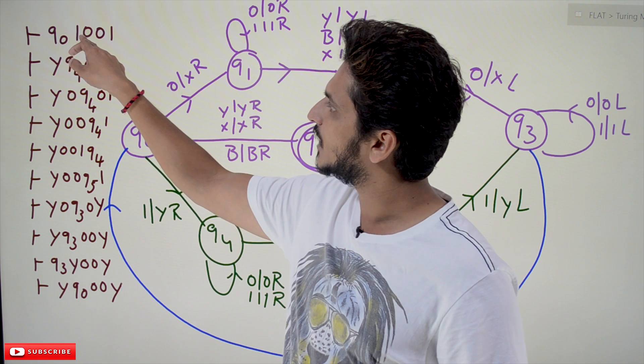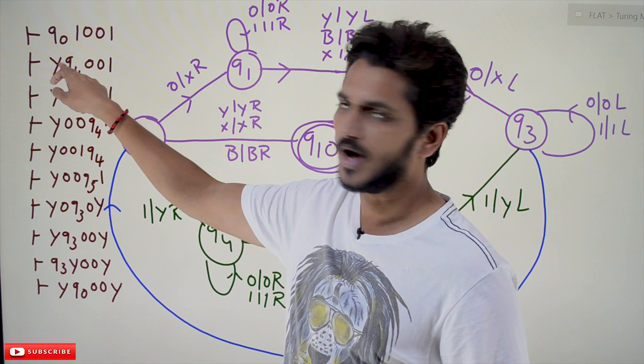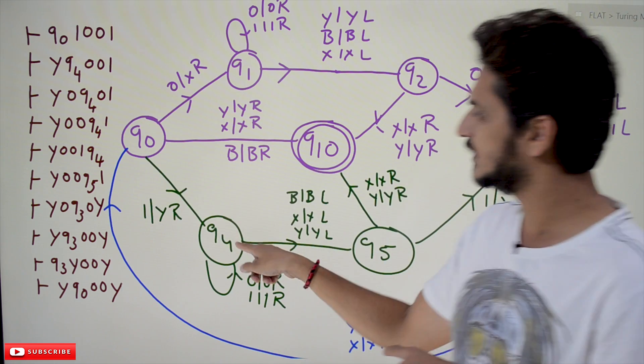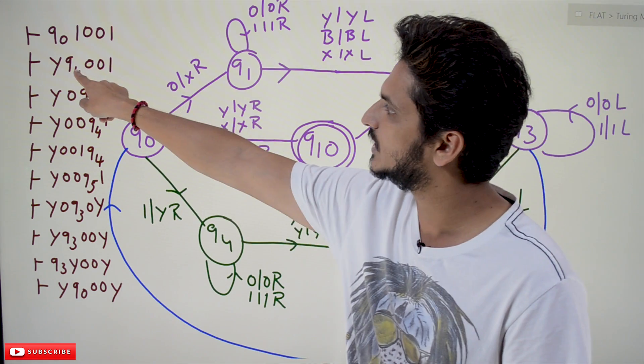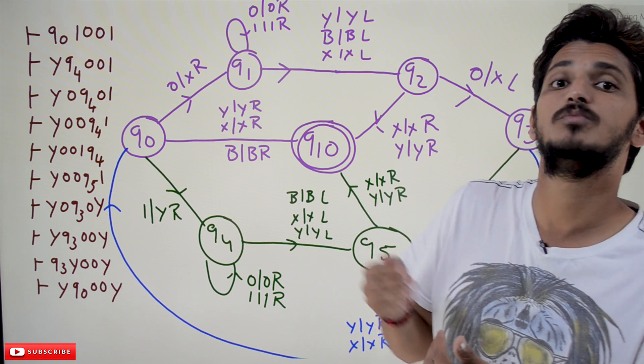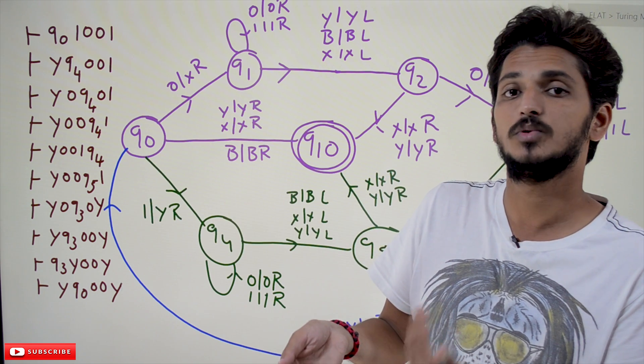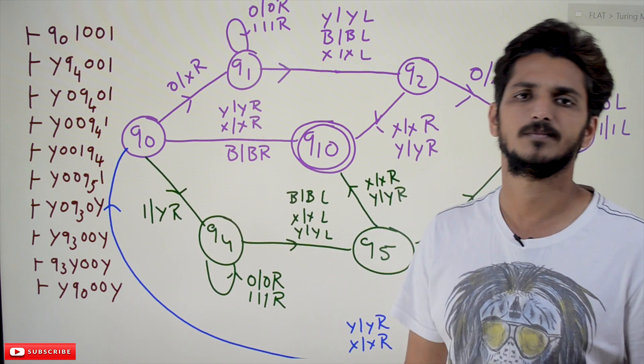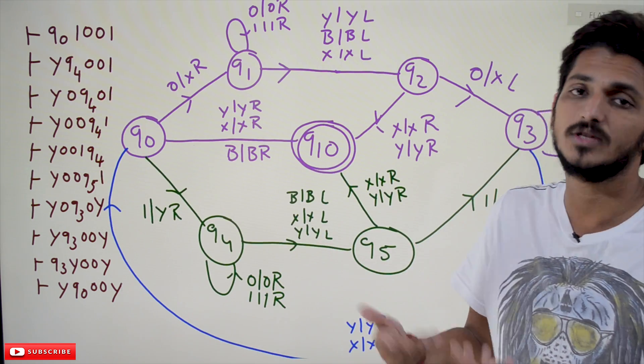Q0 when applied on 1, 1 is converted into Y and we are moving right side. This means we are moving to Q4 state. That's why the next one is Q4 state. On Q4 state we are going to apply the next input symbol. What's the input symbol? 0. That's why Q4 moved right side. That is how we will show that.